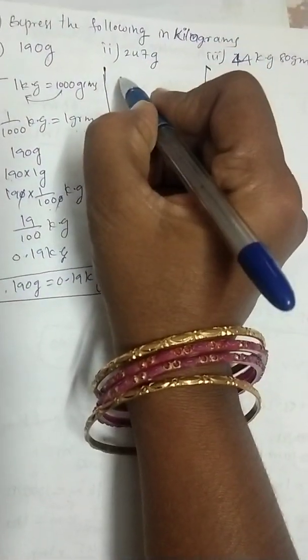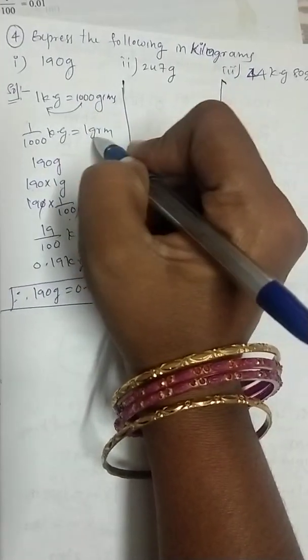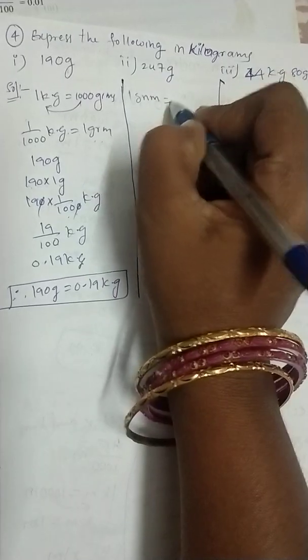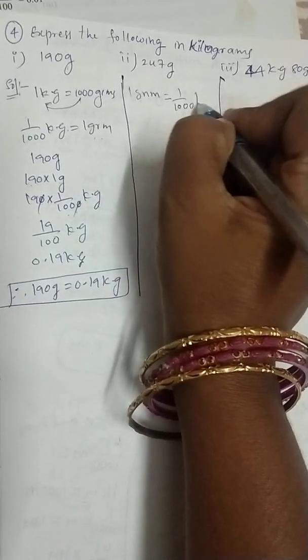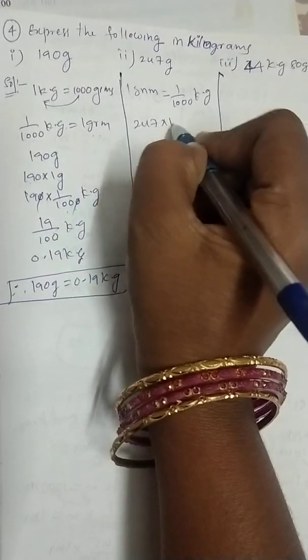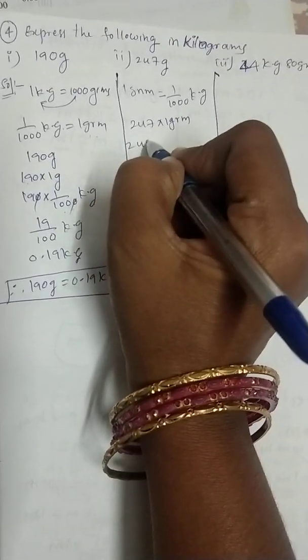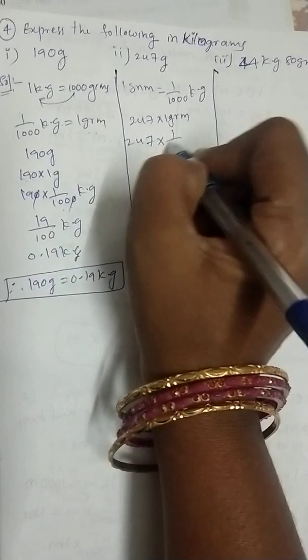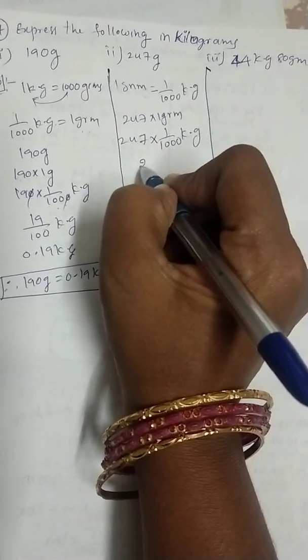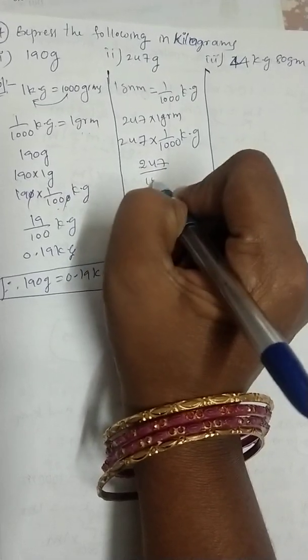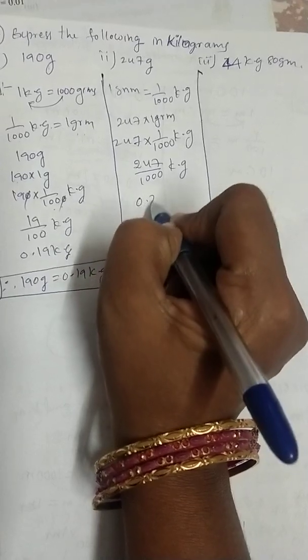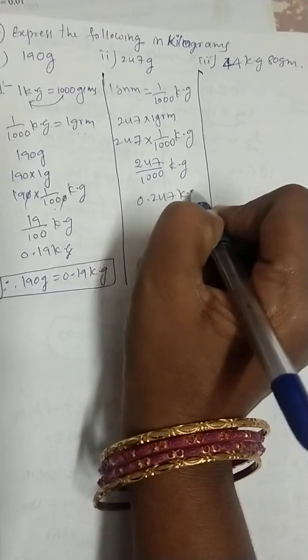Similarly, this one also we can do. We know already 1 gram is equals to 1 by 1000 kilograms. Now, 247 into 1 gram we can write. 247 into 1 gram means 1 by 1000 kilograms. You can write 247 by 1000 kilograms, and you can write in decimal form, 0.247 kilograms.